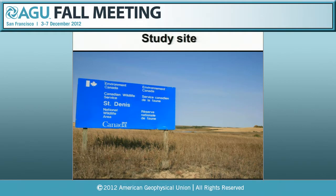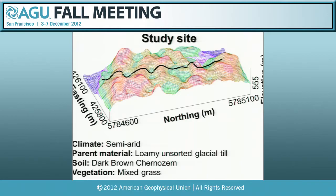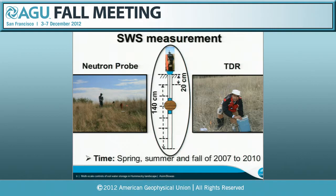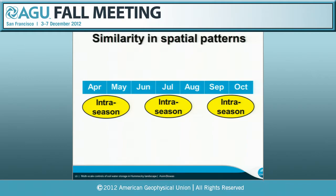I was doing my study at an area called the St. Denis National Wildlife Area, under Environment Canada. The landscape is small depressions — about four to five meters high — in a semi-arid climate. I measured soil water using a neutron probe and time domain reflectometry for the surface layer, and the neutron probe all the way to 140 centimeters depth. I measured from spring 2007 all the way to fall 2010.